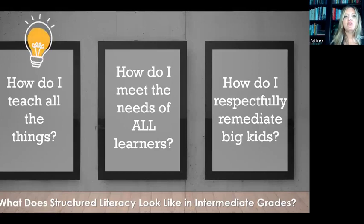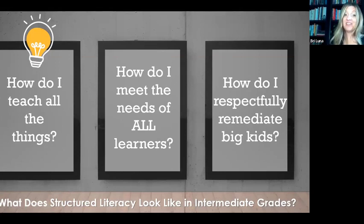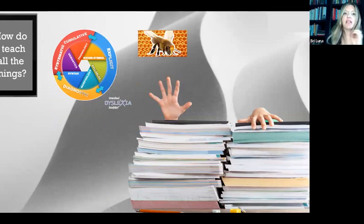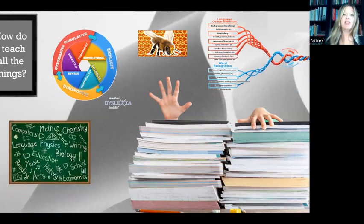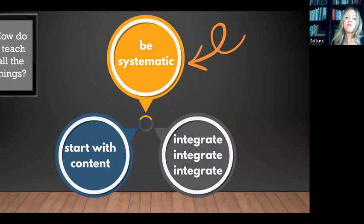Let's start with how do you teach all the things. How do you teach all of the foundational skills — what to teach, how to teach it? How do you make sure you're gaining enough knowledge and getting all of those sub-skills? And how do you also teach grammar, biology, chemistry, reading, literature, and everything else? For this question, I narrowed it down to three key components: be systematic, start with content, and integrate, integrate, integrate.